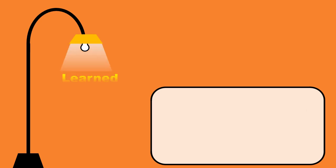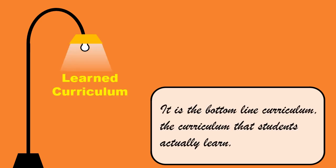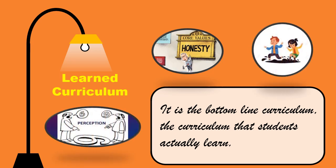6. Learned Curriculum. It is the bottom-line curriculum — the curriculum that students actually learn. It denotes all the changes in values, perceptions, and behavior that occur as a result of school experiences.